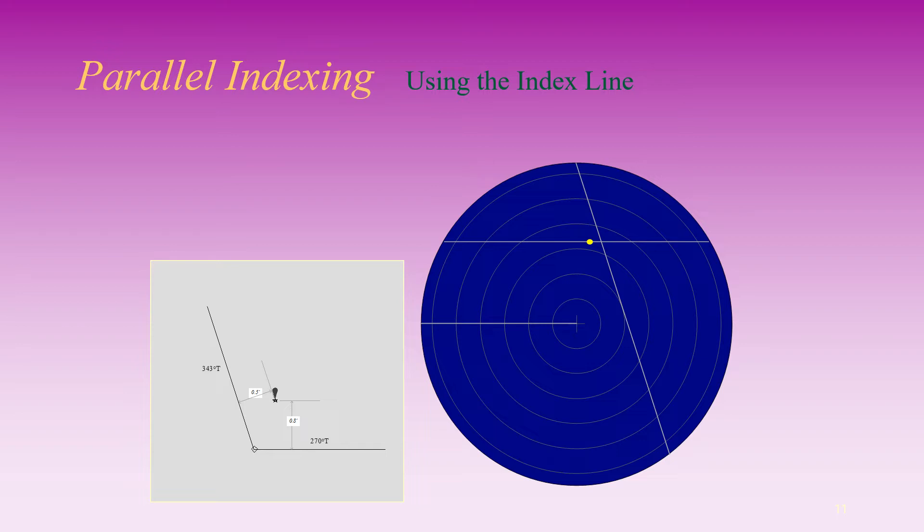In that way we can maintain the vessel along the plan track 273 degrees true, which runs 0.7 nautical miles from land. This line is known as the parallel index line.